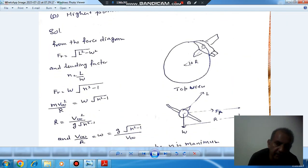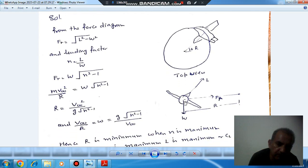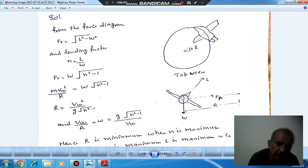This is the aircraft taking a turn in vertical plane, showing the top view. Here L is lift, W is weight, and FR is the centrifugal force taking it away from center.